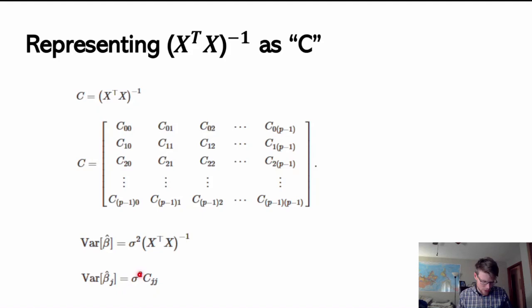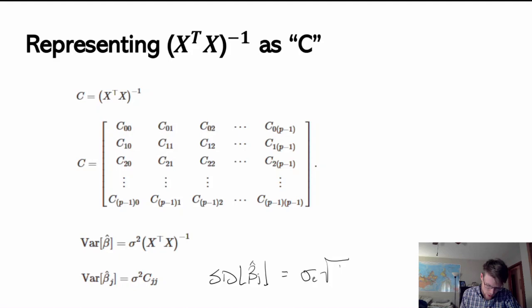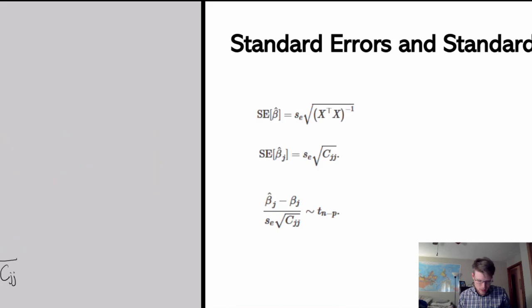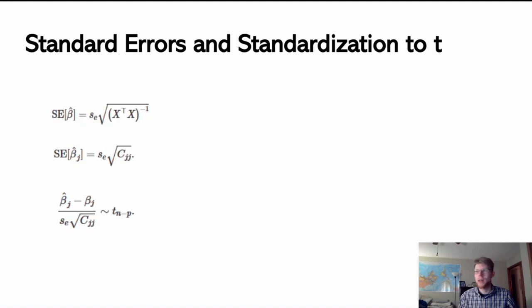Given that variance expression, we can also represent this as a standard deviation. The standard deviation of beta hat j is sigma of the residuals times the square root of C_jj. And I can estimate the standard error of a particular beta hat — since I probably won't have sigma when doing inference, I'll use the sample standard deviation of my residuals: s sub e times the square root of C_jj. This represents my best estimate for the standard deviation of beta hat j.